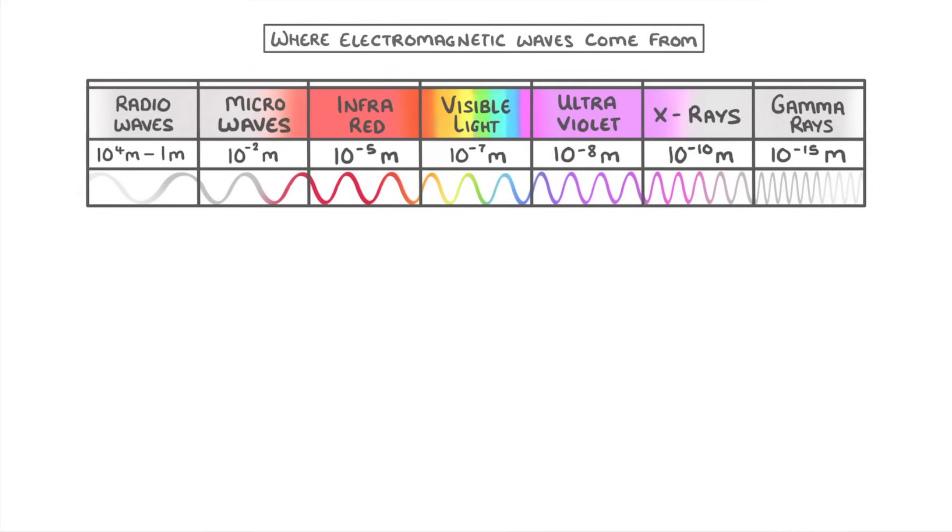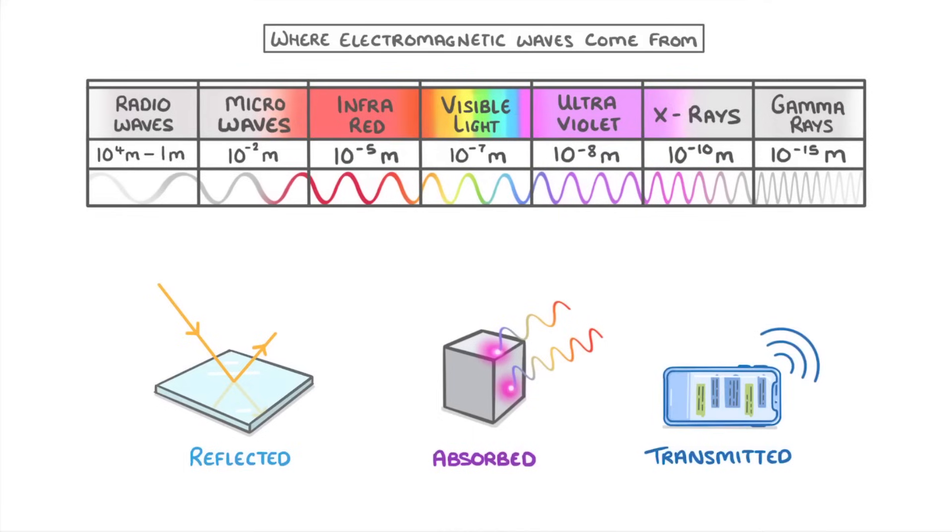Once they've been emitted, all of these waves can then travel across the universe through empty space. And when they come into contact with something, they can be either reflected, absorbed, or transmitted, or sometimes a combination of these three might happen. For example, some waves might be reflected but other waves might be absorbed.